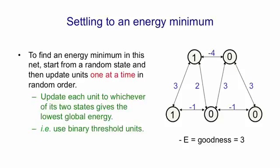It's easier to think about negative energies which I'll call goodnesses. There aren't any biases here so to compute the goodness you just look at all pairs of units that are on and add in the weight between them. In this configuration there's only one pair of units that's active and that has a weight of three so we get a goodness of three.